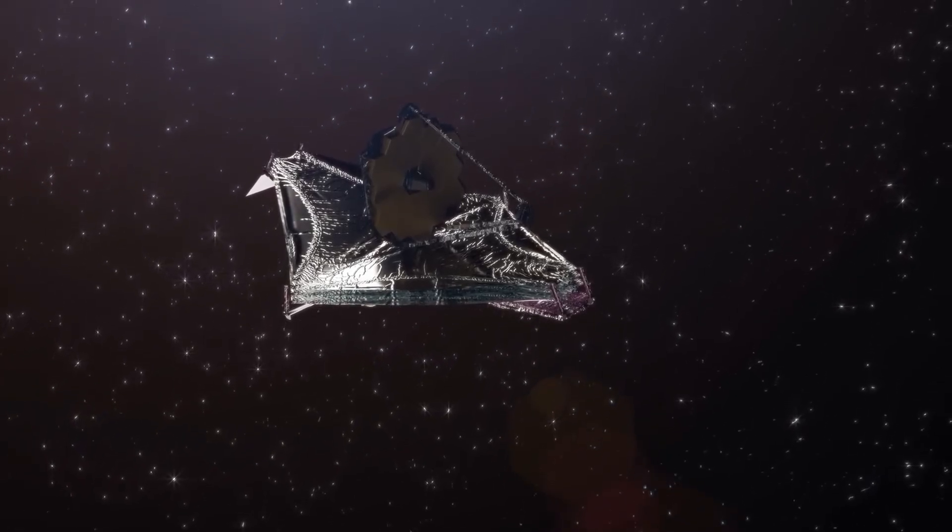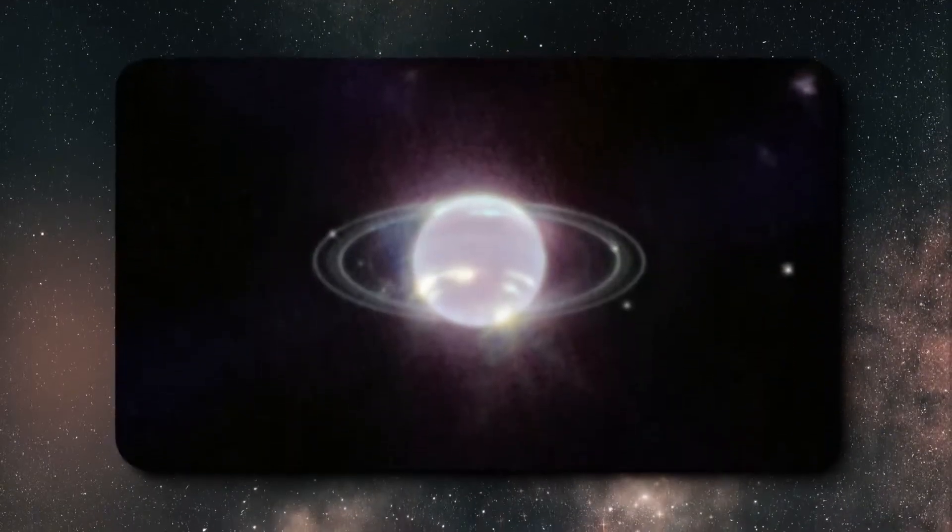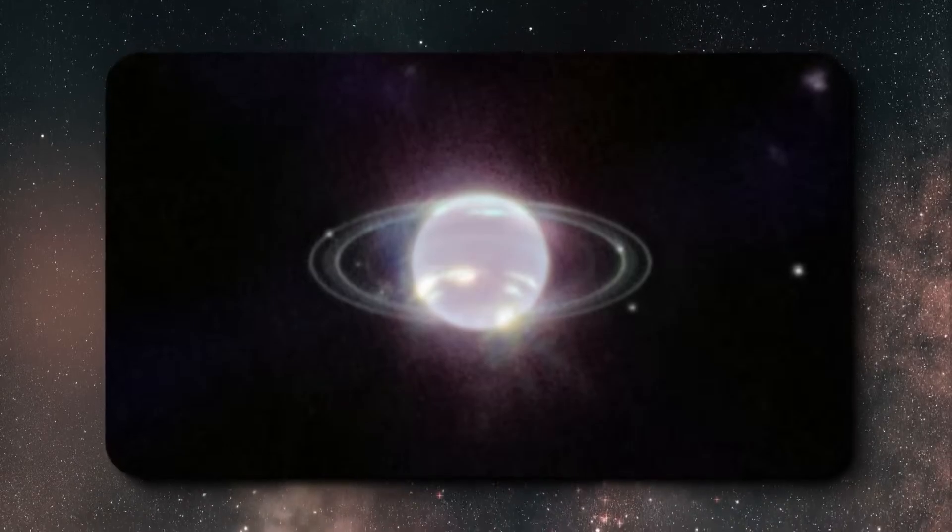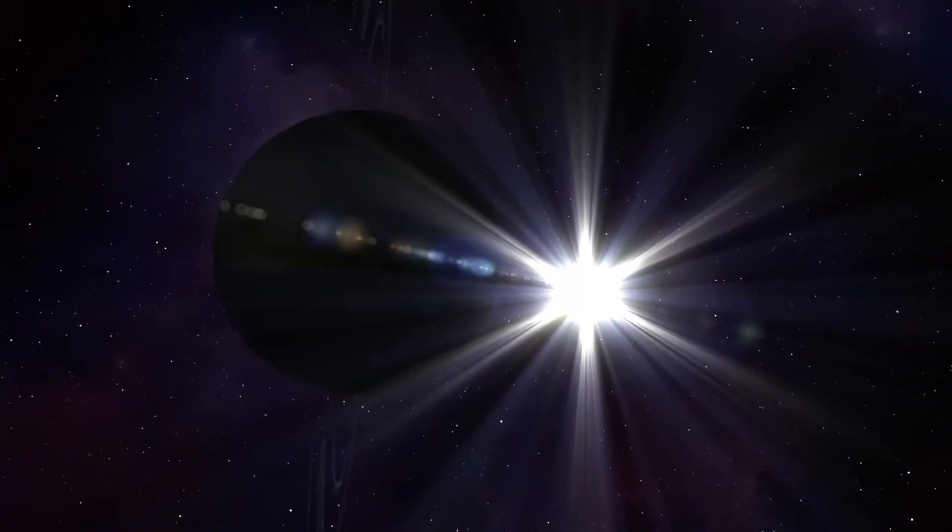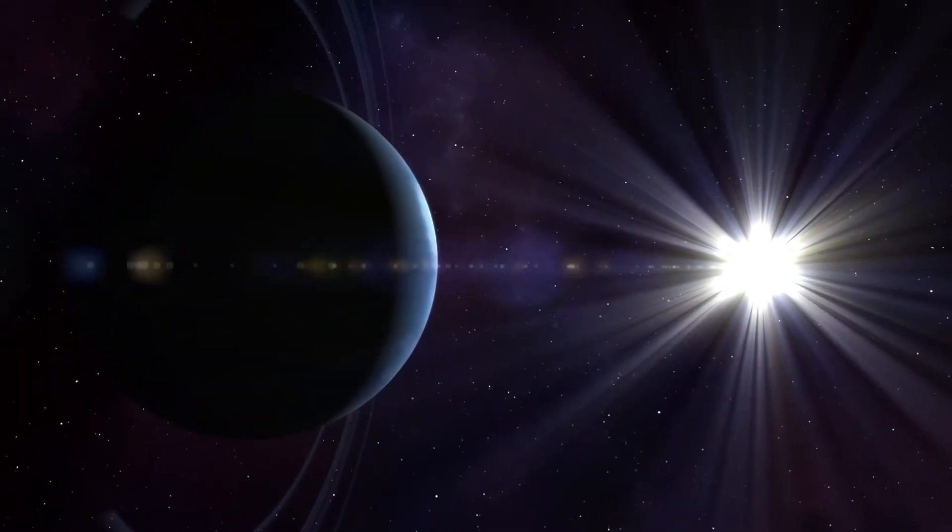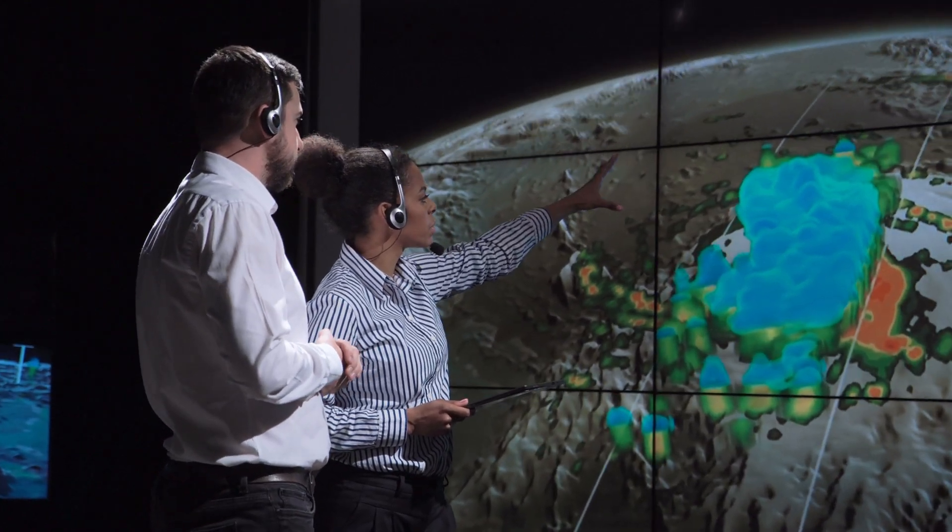The discovery of dimethyl sulfide on exoplanet K2-18b is intriguing because on Earth, it's mainly produced by marine life, hinting at a potential sign of life beyond our planet. However, further studies are needed to confirm its presence and significance.